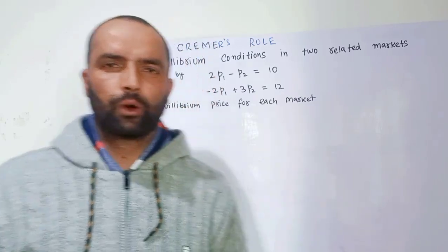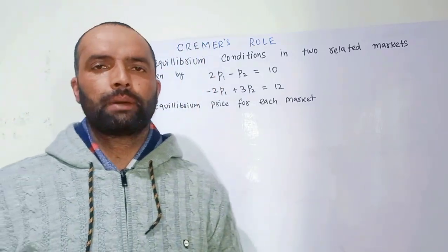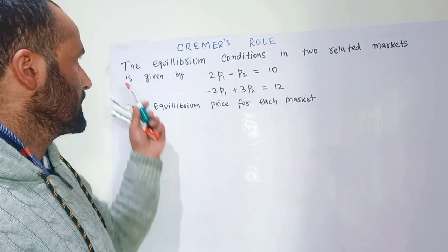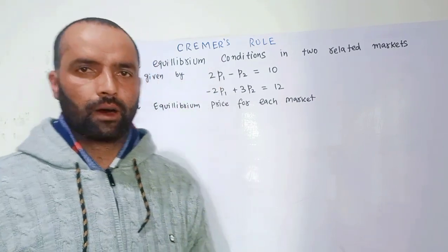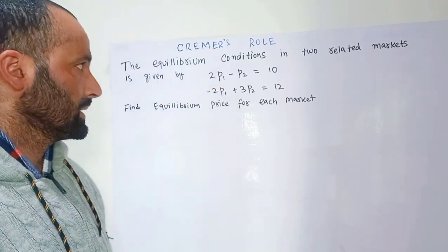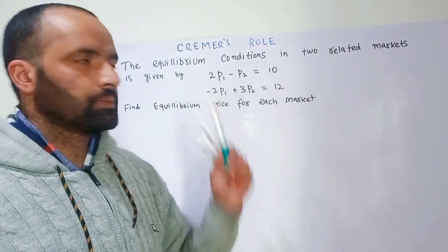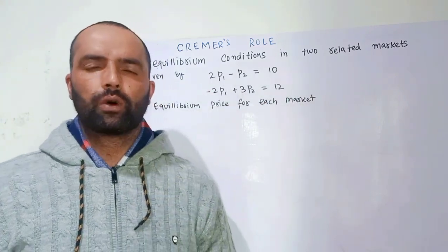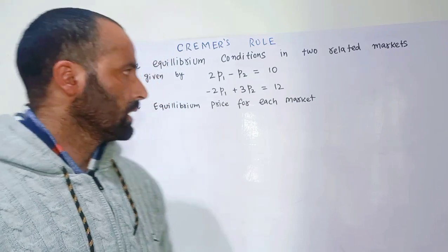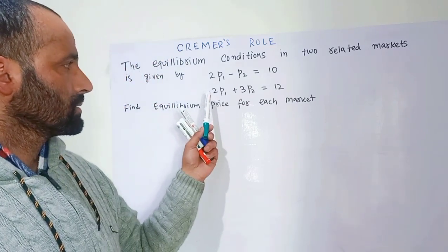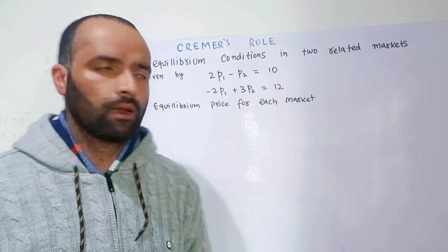In this video we will learn about Cramer's Rule and its economic applications. The equilibrium conditions in two related markets are given: in the first market, 2p1 minus p2 is equal to 10, where p1 and p2 are the prices of two goods. In the second market, the relation is minus 2p1 plus 3p2 is equal to 12.